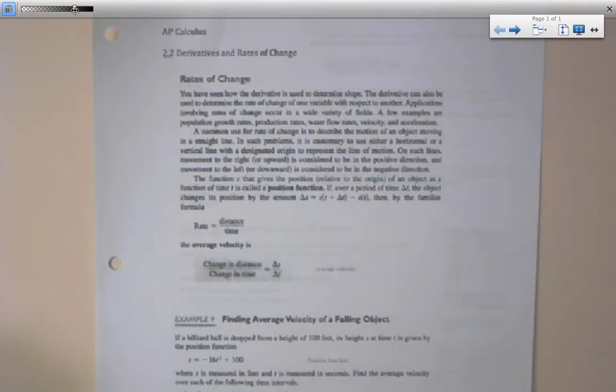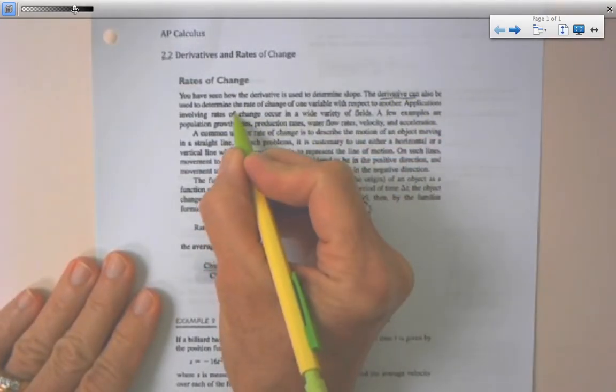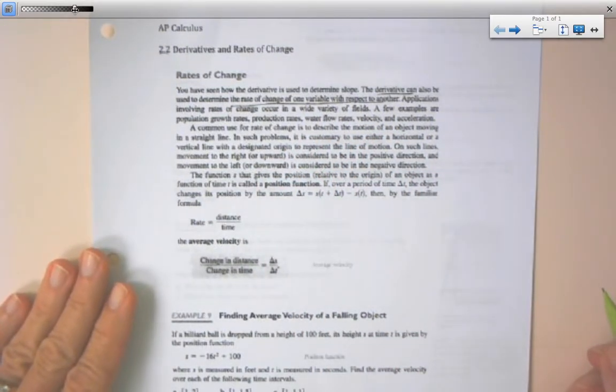If you already have the notes, let's go ahead and get started on this lesson. We use a derivative to determine the rate of change of one variable with respect to another, and this is where we're leading up to applications.